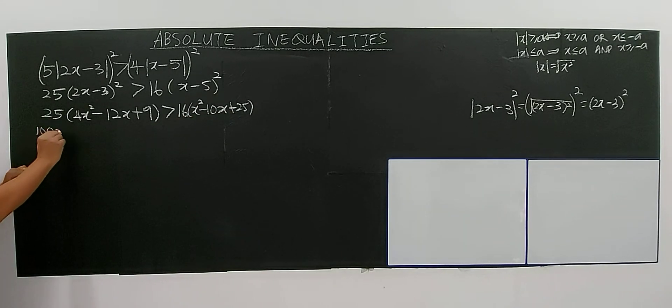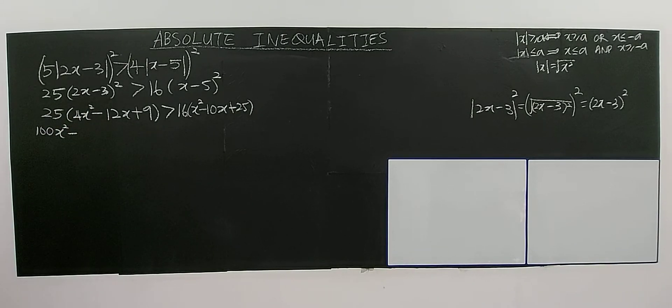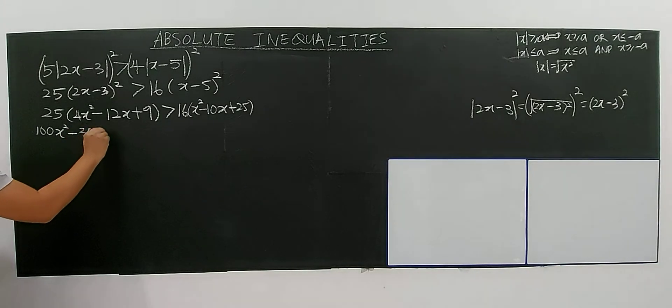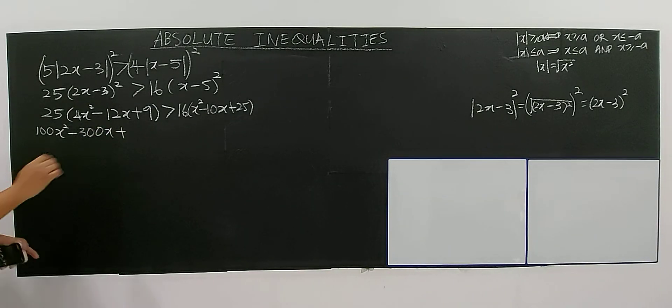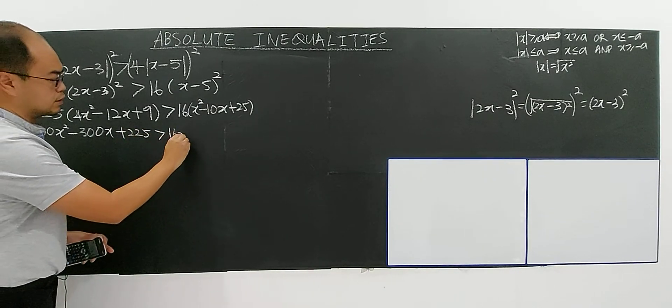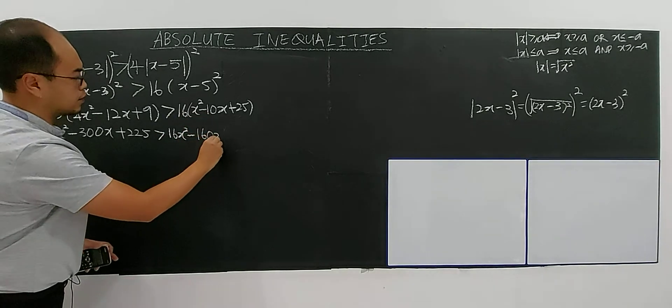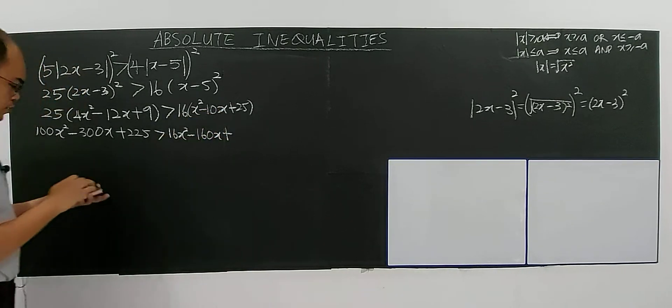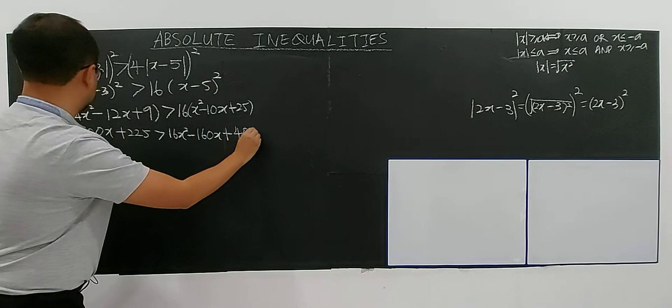Alright, then you expand. You have 100x squared minus with 12 times 25, that's 300, plus 9 times 25 you have 225, greater than 16x to the power of 2 minus with 10 times 16 you have 160x, plus 25 times 16 and you have 400.